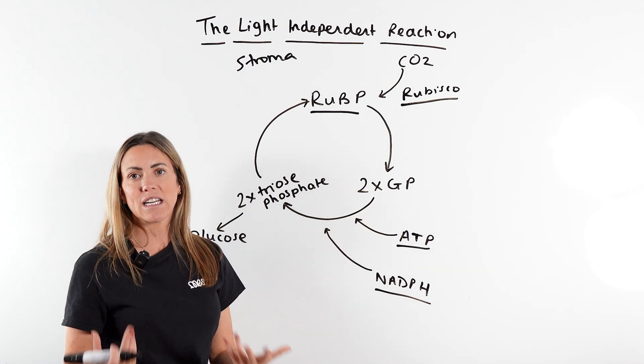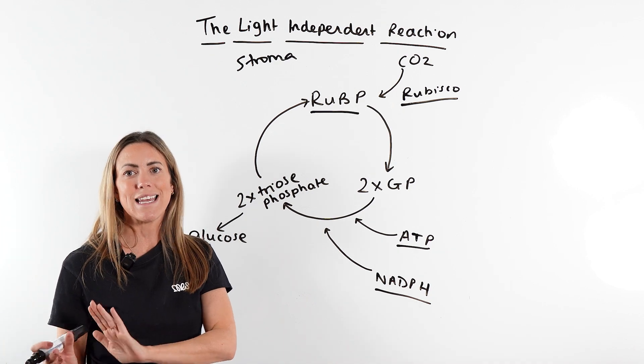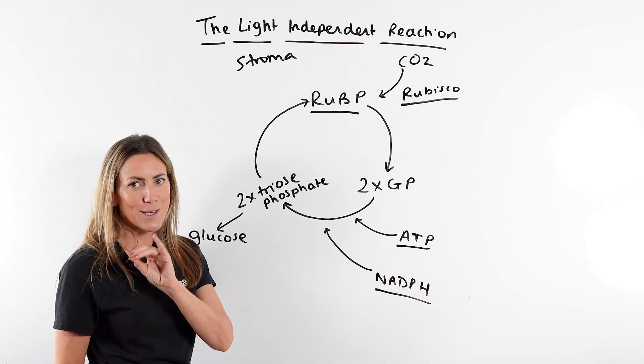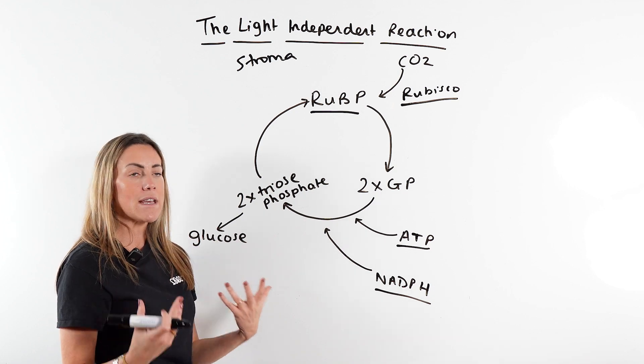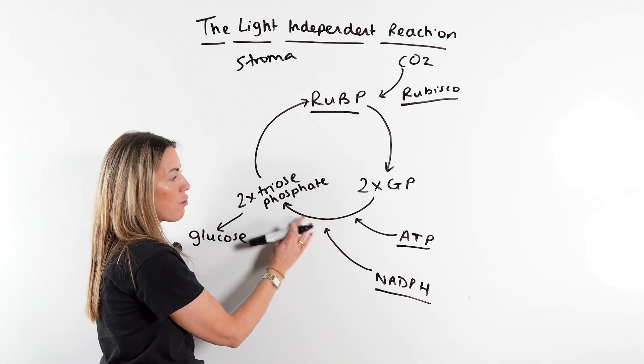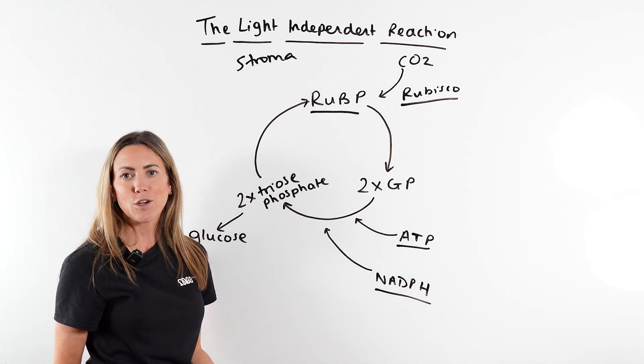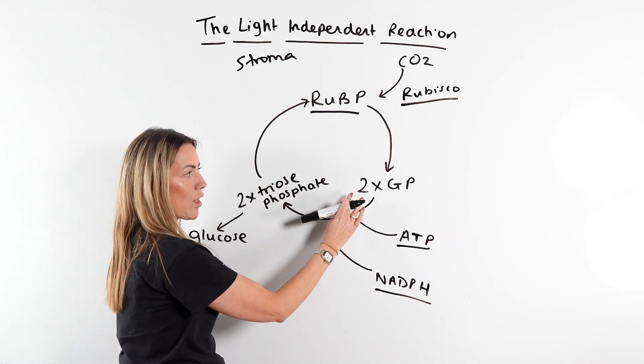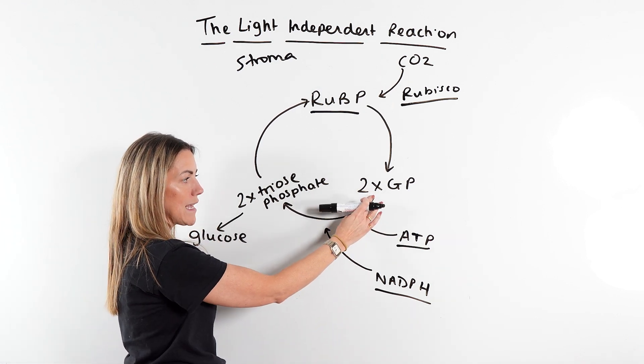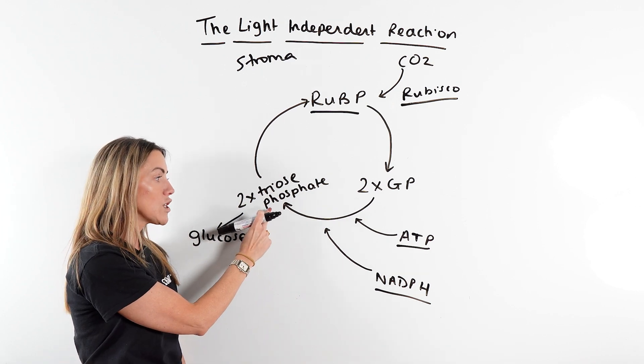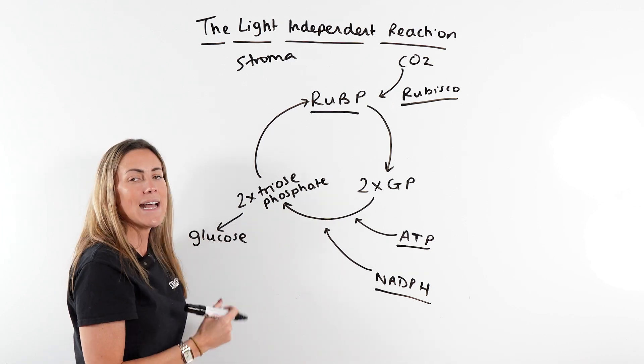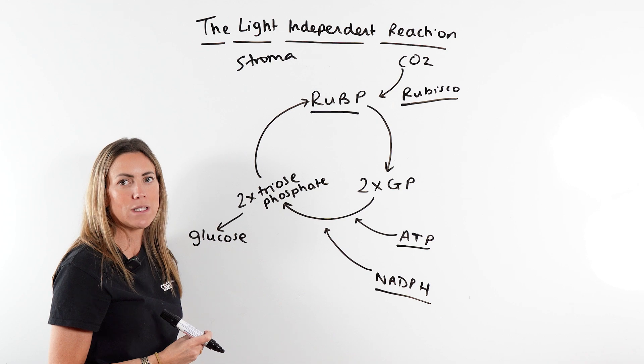Now GP stands for glycerate-3-phosphate, but you can abbreviate it in your exam if you are AQA. Two molecules of GP, each with three carbons. Then we've got probably the most important bit or the bit that comes up most on the exam. Those two molecules of GP are reduced into two molecules of triose phosphate, which we must name, hence why I've not shortened that to TP.